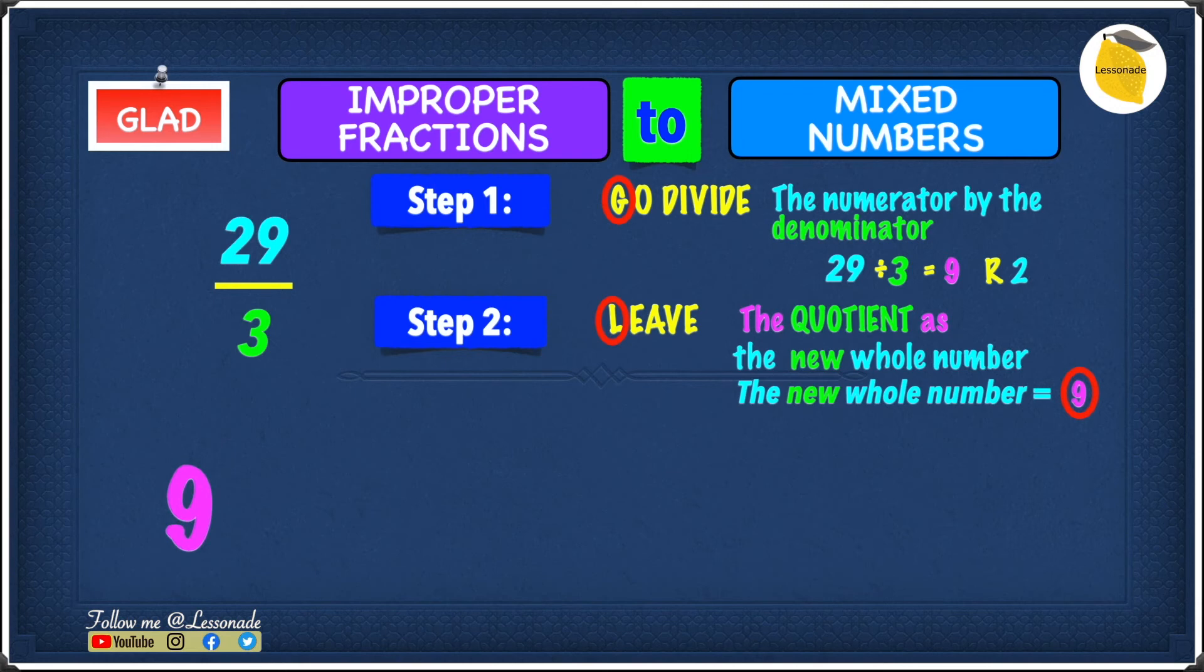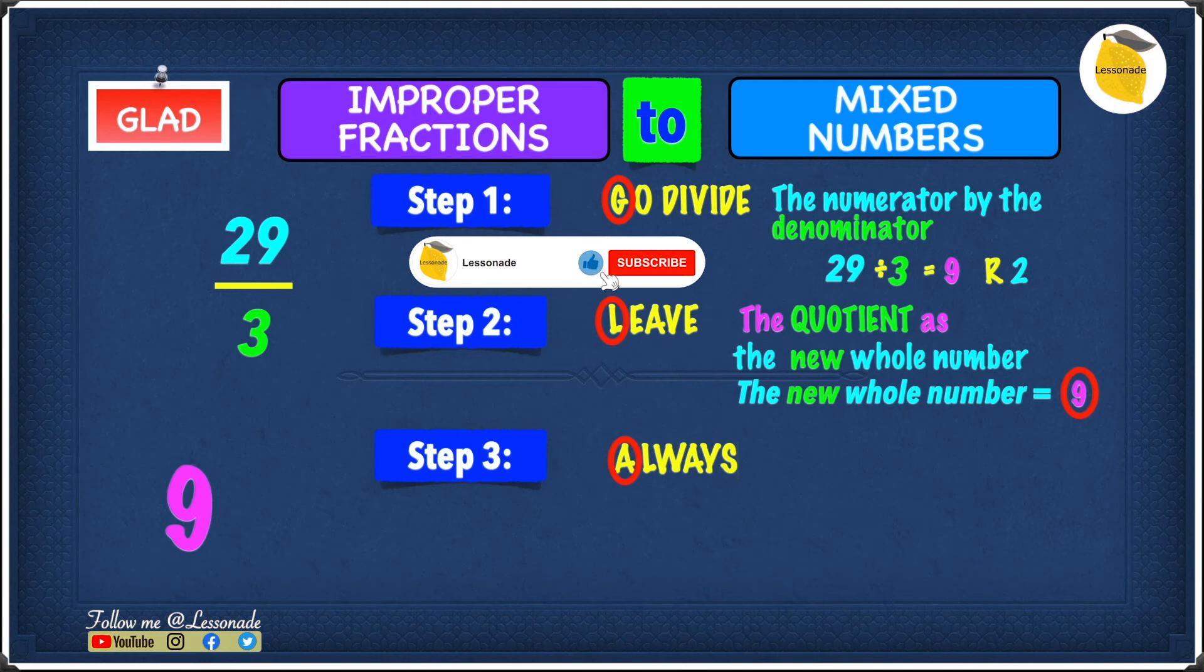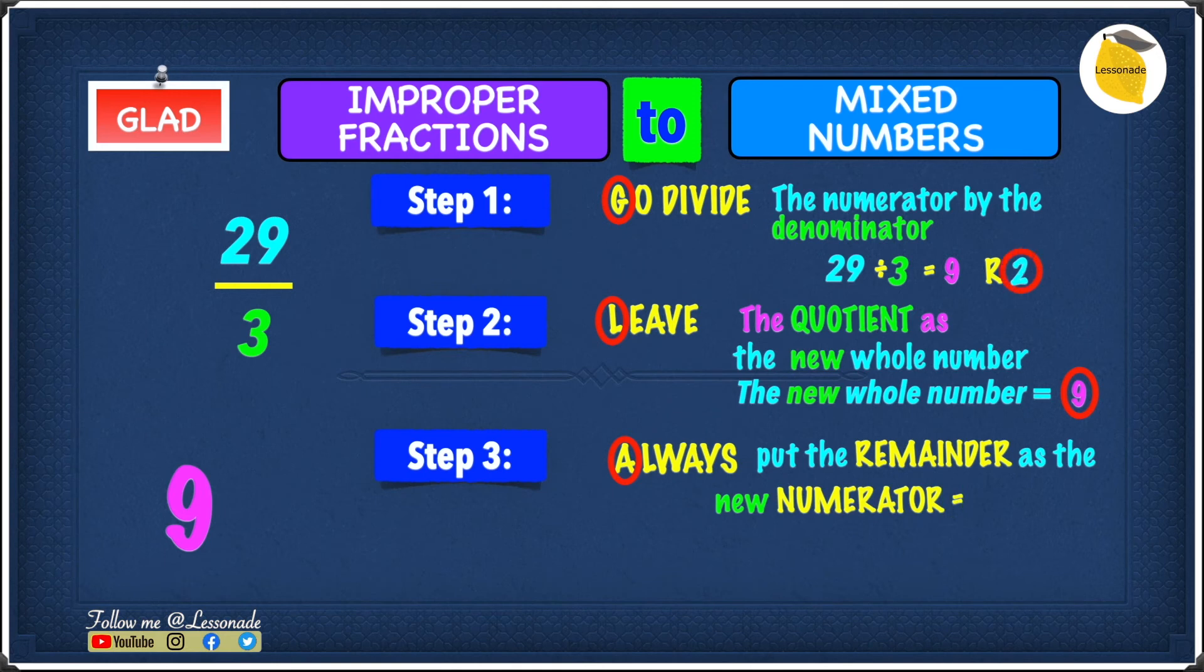Let's move into step 3. Step 3 is A, and A is always put the remainder as the new numerator. And the remainder is 2, so that means 2 will be our new numerator. And we can write this down. So we can put the line and we now have to find the denominator.